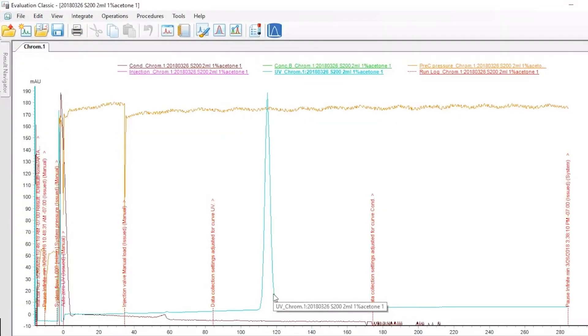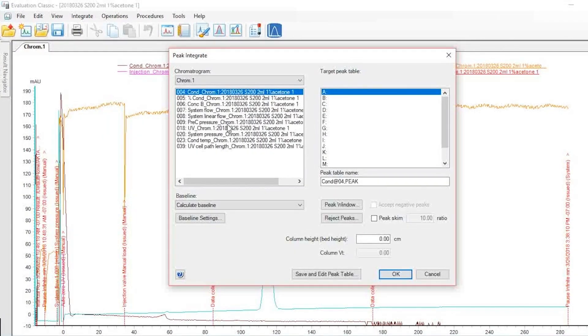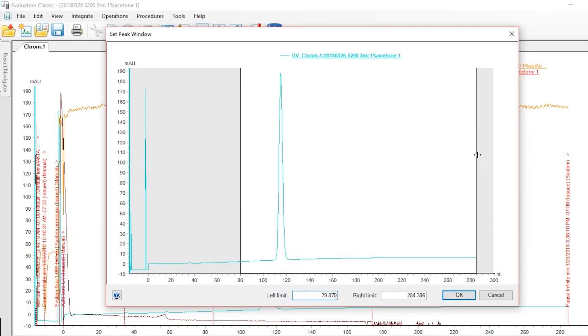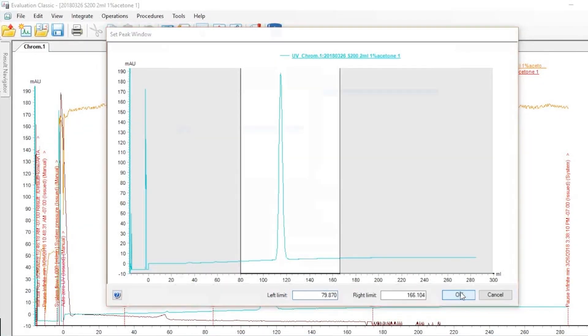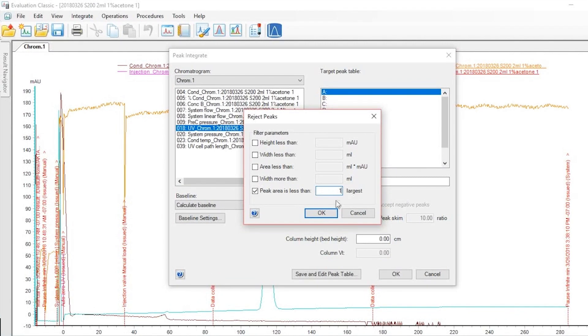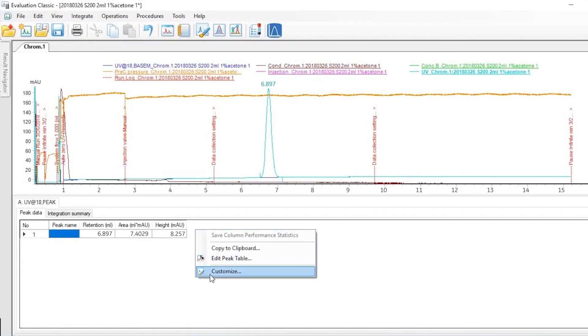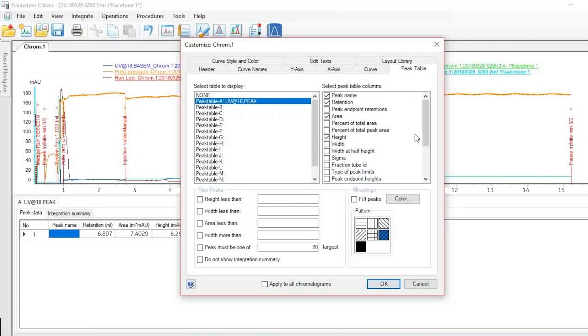Apply the sample and start the method. When this run ends, open the result and integrate the UV signal. Type in the bed height of the packed column. Click right in data table, select HETP and asymmetry. Here, you can find relevant values of column performance in the data table.